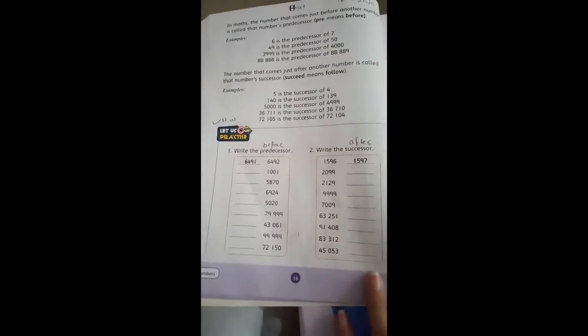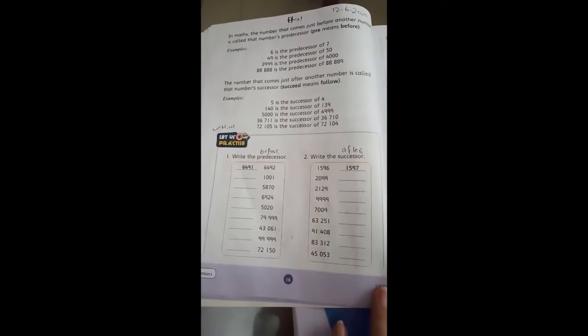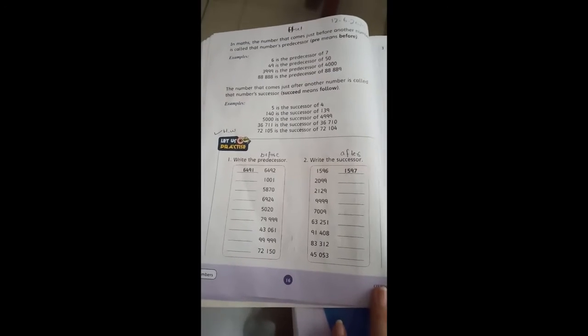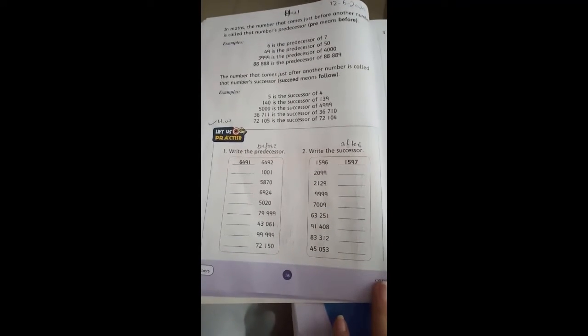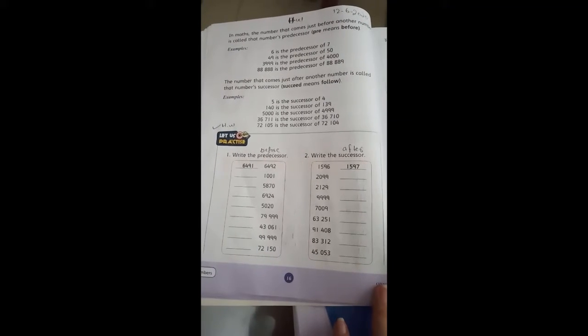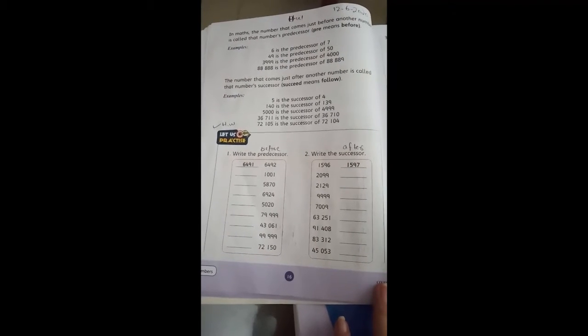And how you can see place value, and how you can see the form in expanded form, and how you describe four and five digit numbers and how you write them. Today we are going to start our topic from page 16, which is about predecessor and successor.